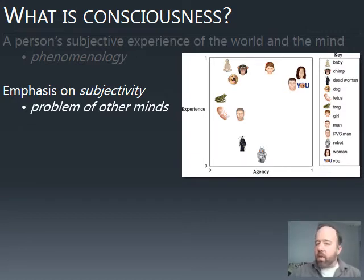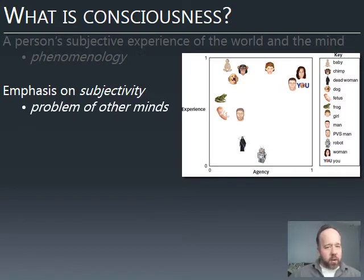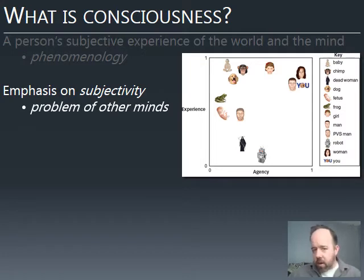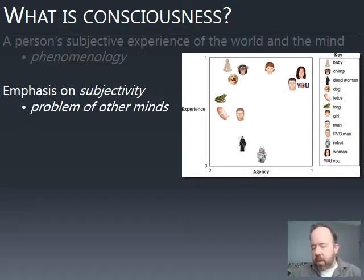This brings up the problem of other minds. We know that we're conscious and sort of assume that other people are, but it's very hard to prove that. What constitutes the mind? What are the components of the mind, and how do minds vary? Experiments have been done looking at people's assessment of other, quote, unquote, minds.